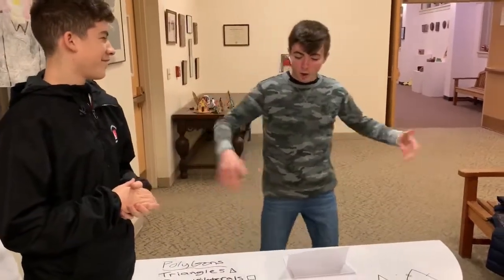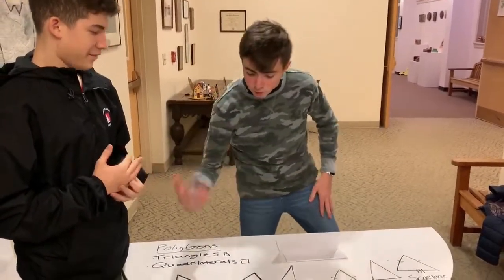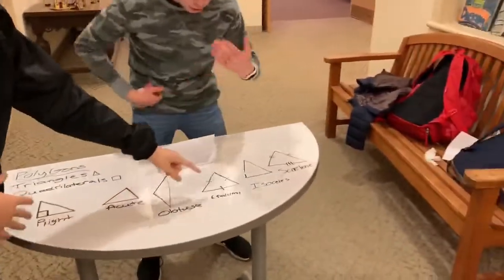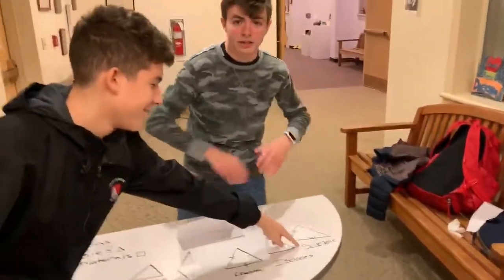We've got all these triangles: right, acute, obtuse, equilateral, isosceles, and scalene.